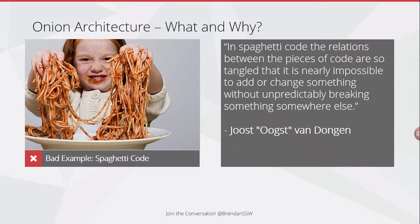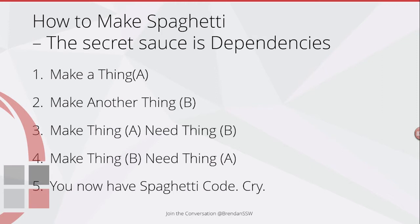In order to avoid spaghetti code we use a number of techniques to organize where we put the various components of our system. The secret source here is dependencies. You start by making a thing — a class — that performs some operation. These things are generally useless on their own so you make another thing, and then to make them work together thing A has a dependency on thing B. But as soon as thing B also needs thing A, those two components are locked together and very hard to pick apart. The key issue is managing those dependencies — be clear about which pieces of your code depend on others.